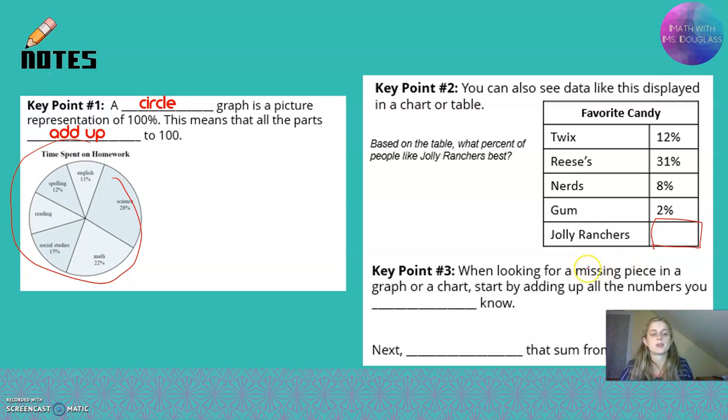So how do we solve for missing parts? Step one, when you're looking for a missing piece in a graph, like a circle graph or a chart, like what you see here with the favorite candy, start by adding up all the numbers you already know.